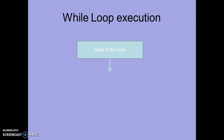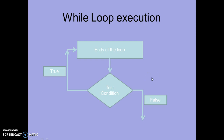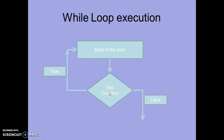Looking at the flowchart, we initially enter the loop body. Then the condition is tested — if the condition is false, we exit the loop; if the condition is true, it continues to execute the body of the loop. We enter at the beginning, the condition is tested, if true the body executes again and the condition is tested again, continuing until the condition becomes false. Once the condition is false, the loop is terminated.